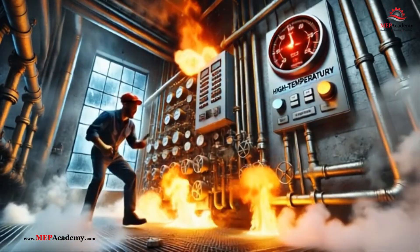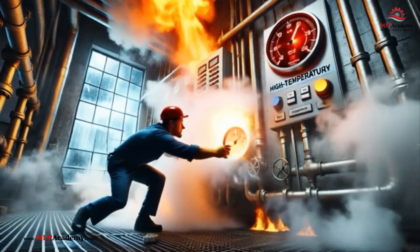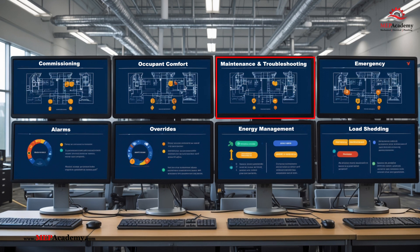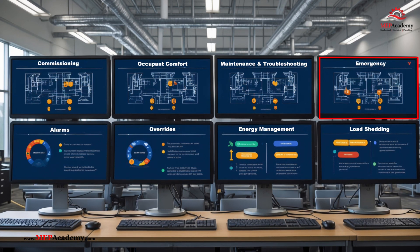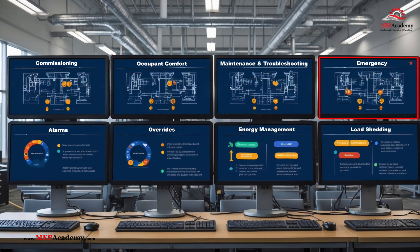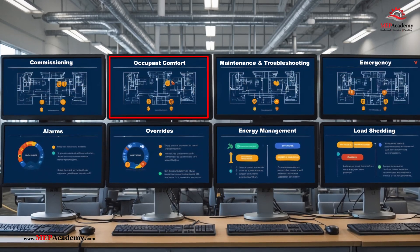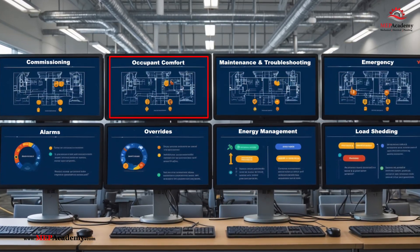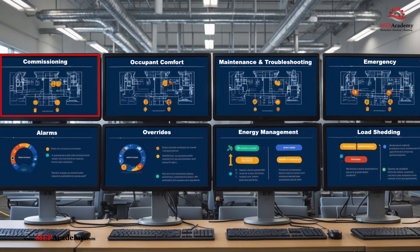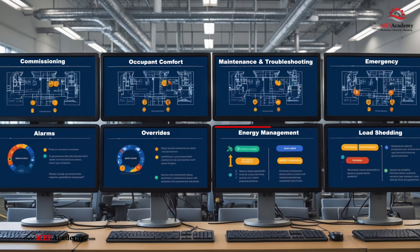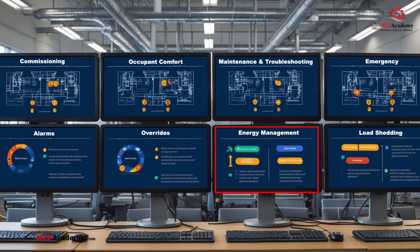Purpose of overrides: Overrides serve several key functions in building automation. Maintenance and troubleshooting allows testing and diagnosis of individual equipment without automation interference. Emergency situations ensure critical systems such as smoke evacuation fans or fire suppression operate regardless of the control logic. Occupant comfort adjustments temporarily modify set points to accommodate specific user needs. Commissioning and calibration verifies system responses during initial setup or post-maintenance. Energy management and load shedding overrides can help reduce energy costs by temporarily disabling non-essential loads.